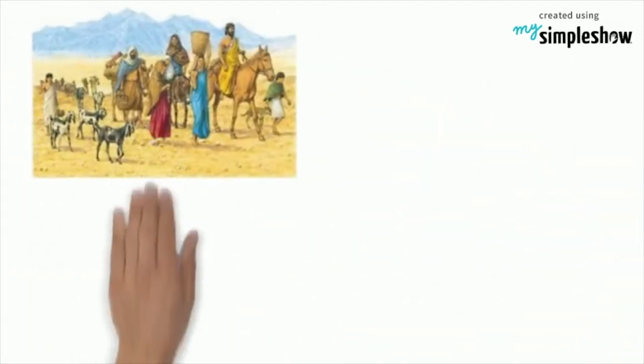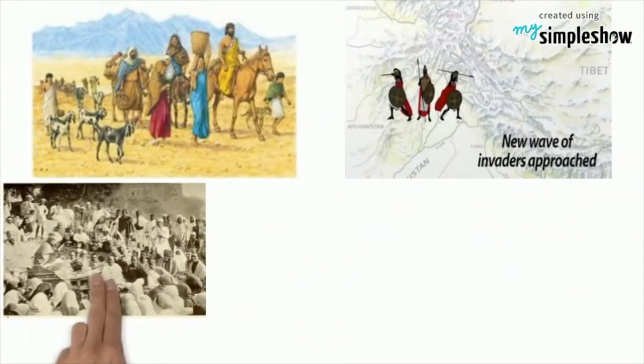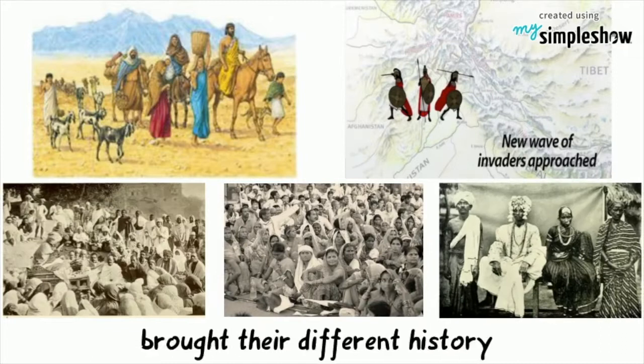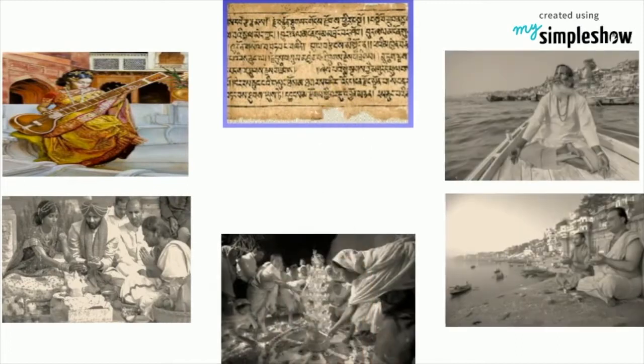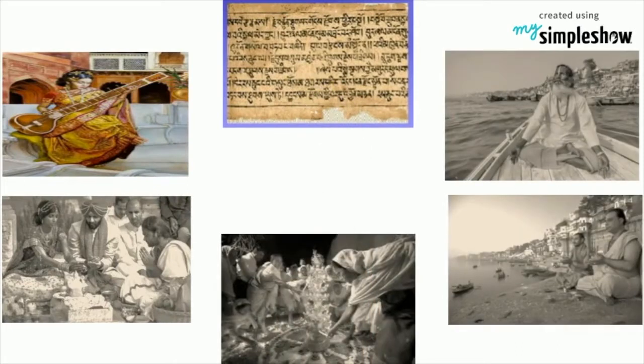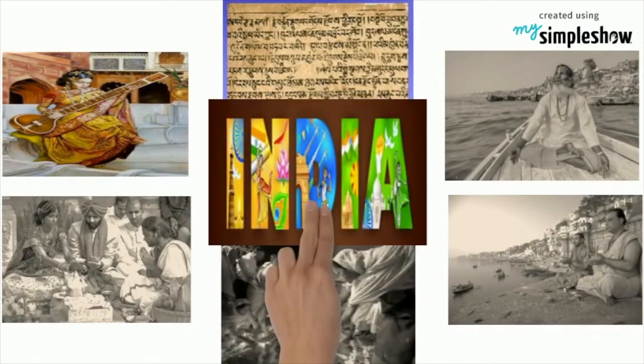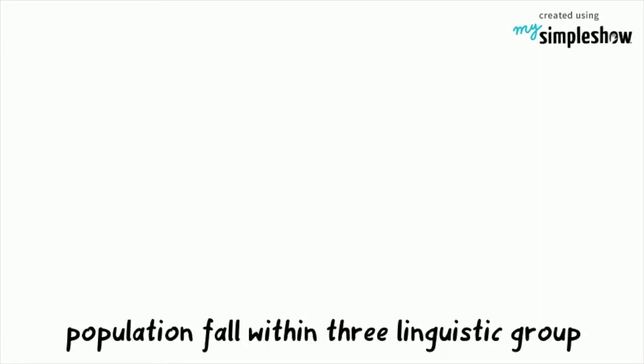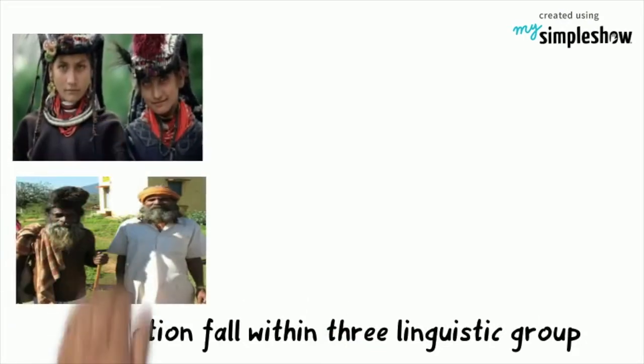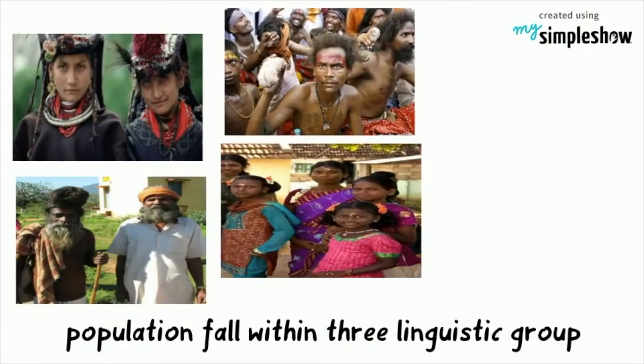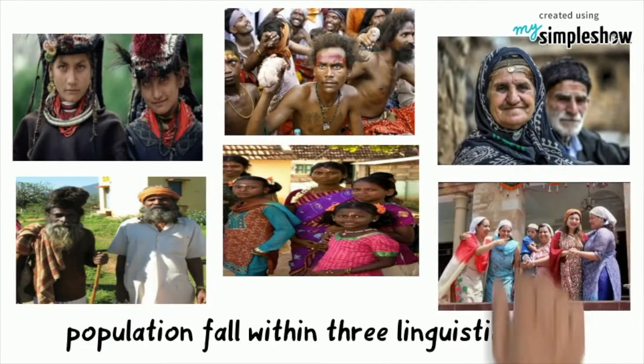Diversity is due to large-scale migrations and invasions into India over thousands of years. The immigrants and invaders brought with them different histories, cultures, languages, and religions. The majority of the population falls within three large linguistic groups: the Indo-Aryan people, the Dravidian people, and the Iranic people.